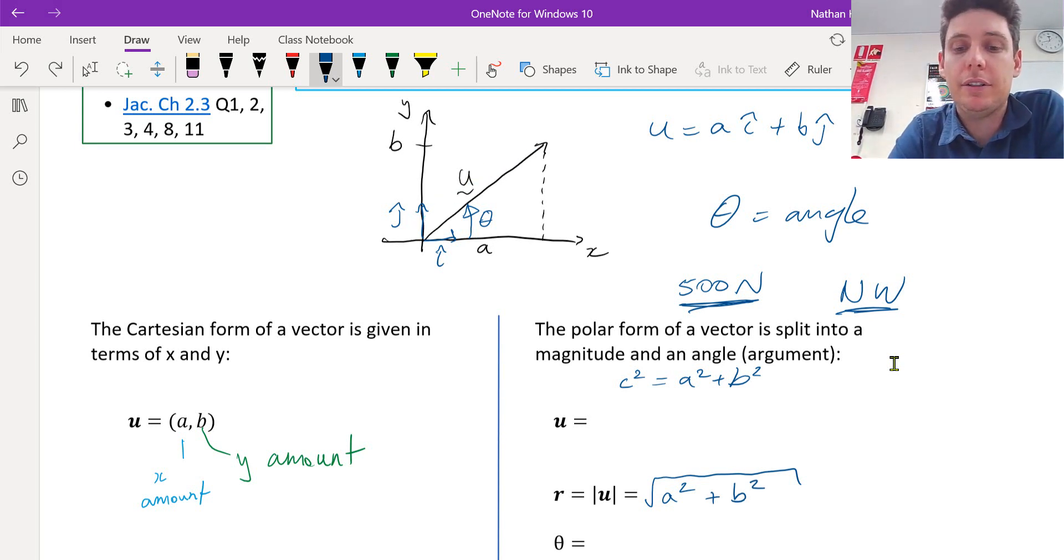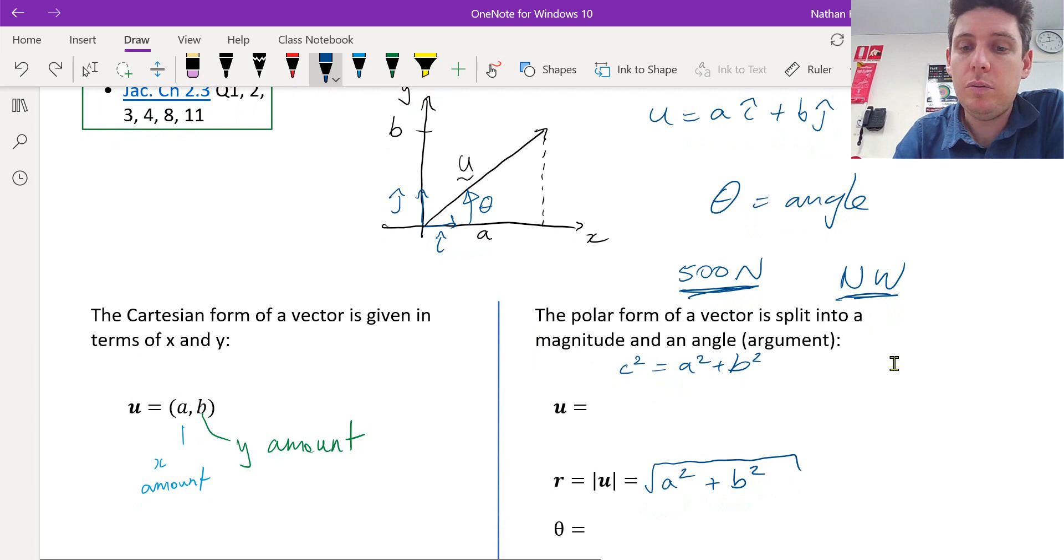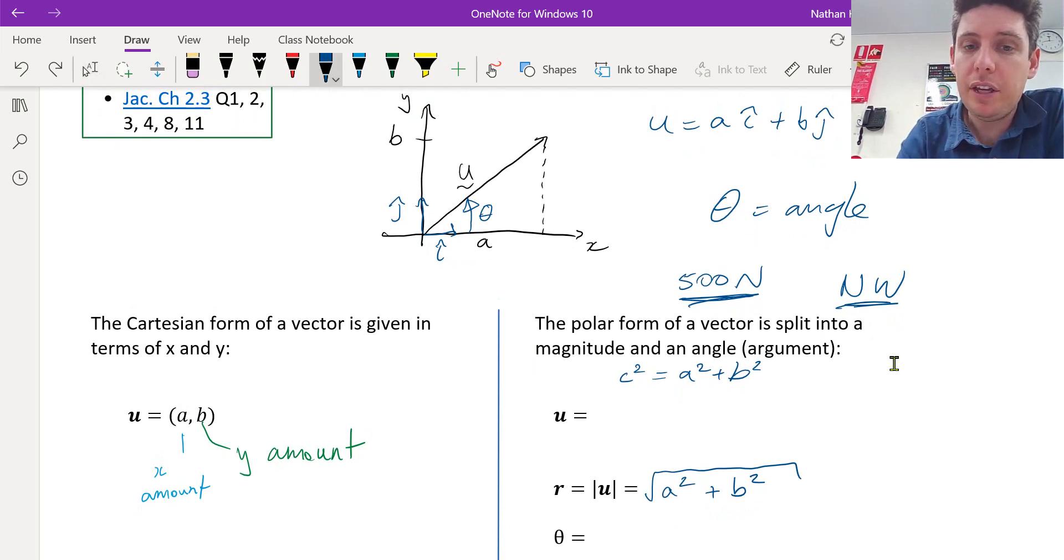To figure out the angle, we have the adjacent and the opposite. And we want to find the angle for the adjacent and the opposite, a and b. So we can use tan negative 1, b over a, or the y value over the x value to figure out that angle. And that's how we convert from Cartesian to polar.